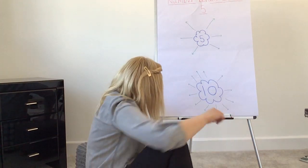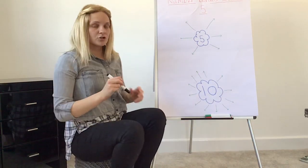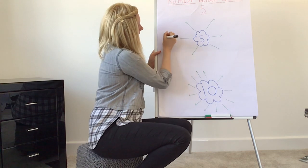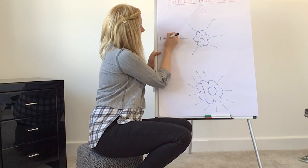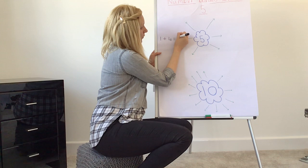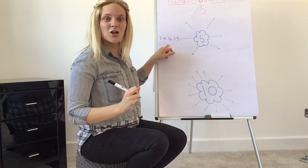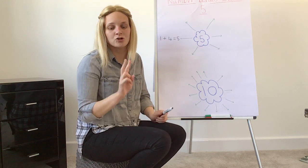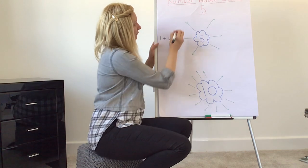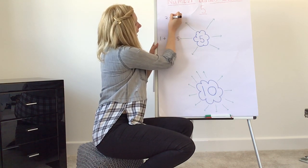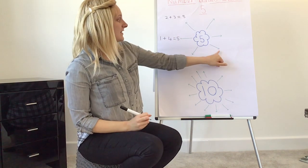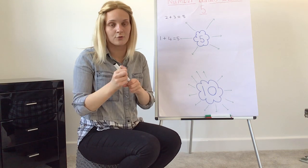When you have found the number sentence, I want you to come back to your spider diagram and write it down. Our first one was one add, can you remember, one add four equals five. There's your first number bond within five. What was the second one that we just done? Can you remember? Two add three. So two add three equals five. Then I want to see if you can find the rest on your own.